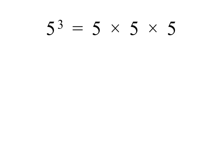By now you should know what 5-cubed means. It means multiply 5 by itself 3 times. We call 5 the base, and 3 the exponent or index.